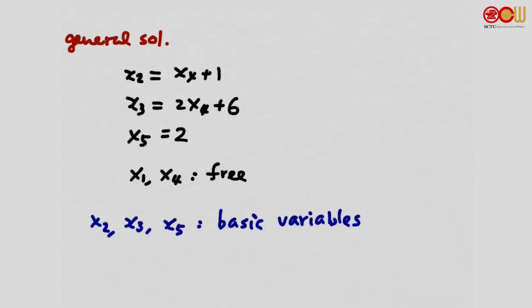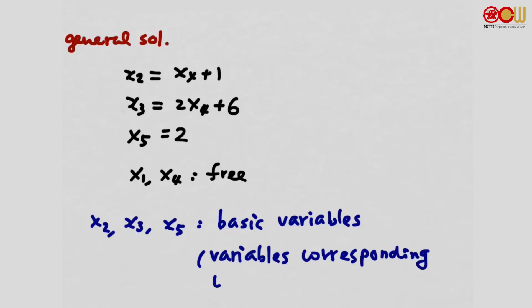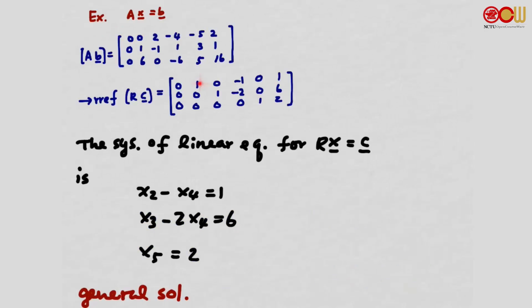What do we mean by basic variables? These are variables corresponding to leading entries. We can see that this leading entry corresponds to the coefficient for x2, this leading entry corresponds to x3, and another leading entry corresponds to x5. So x2, x3, and x5 are the basic variables.